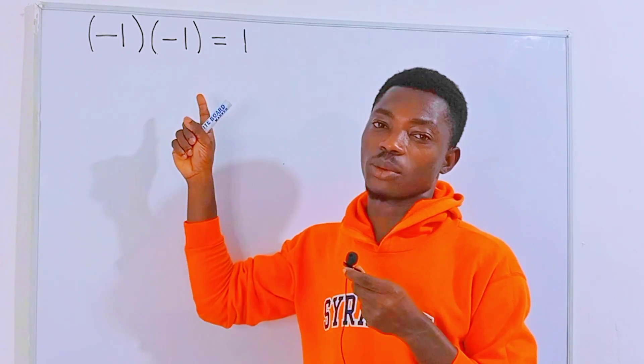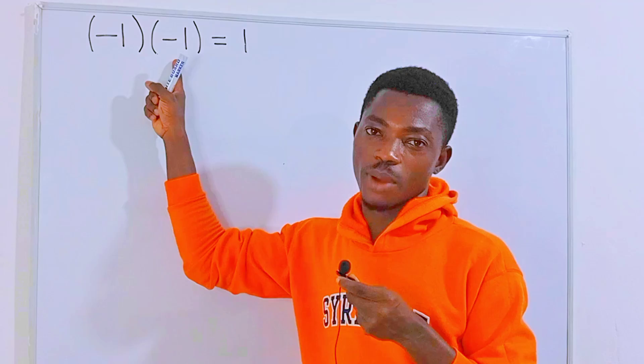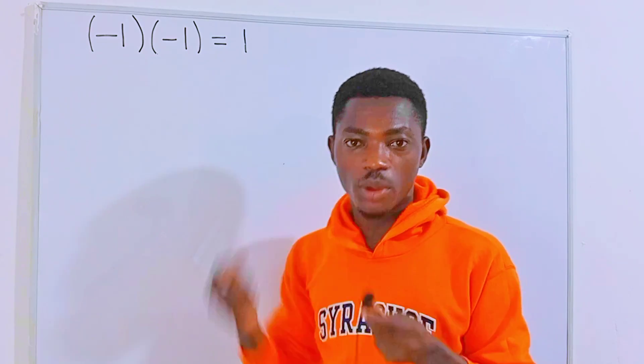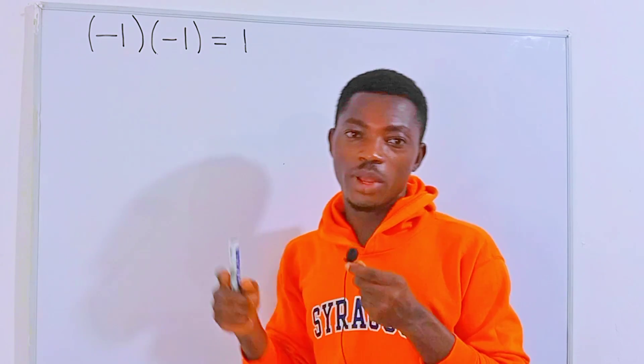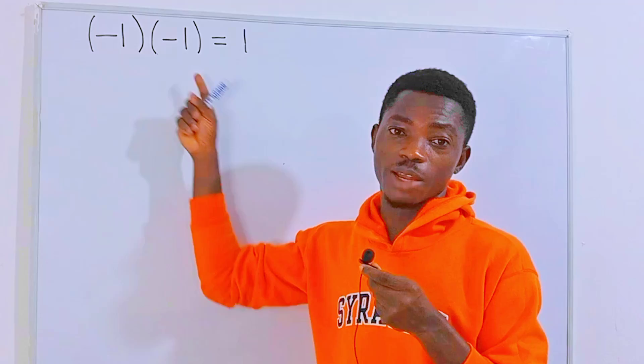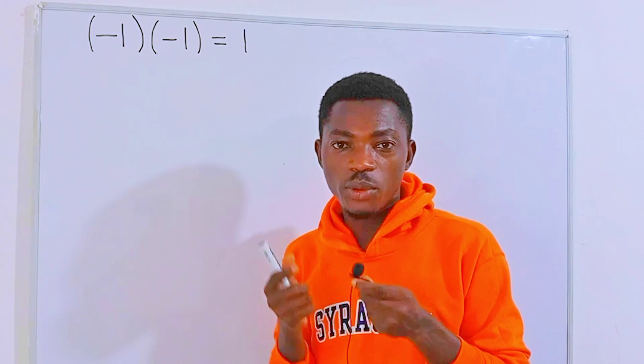Hello guys, let's check this out. Negative one times negative one is equal to positive one. In other words, negative times negative is always positive. We literally use this rule almost every day in our math class, but have you ever realized the proof of this?